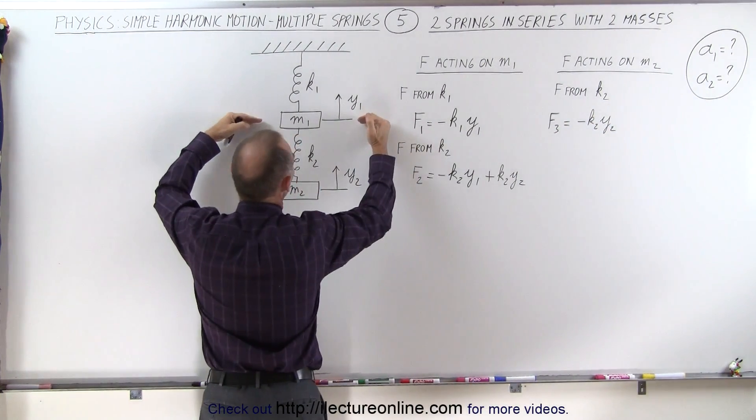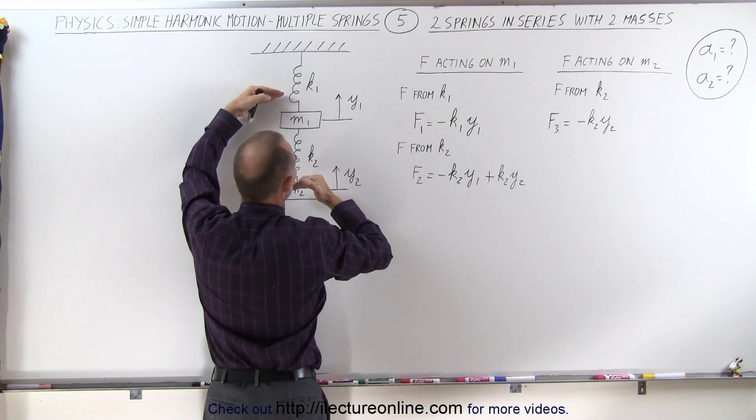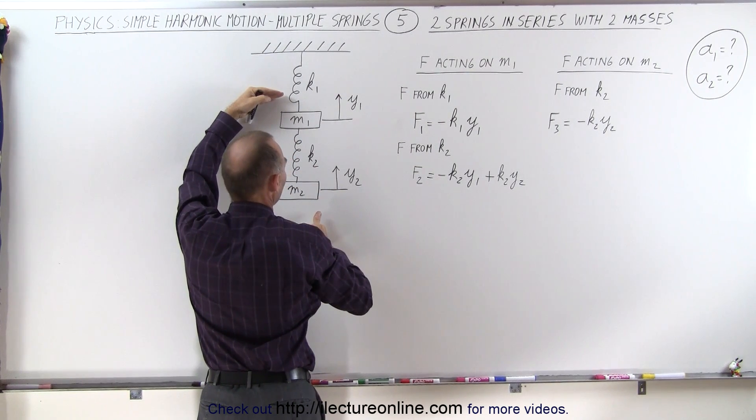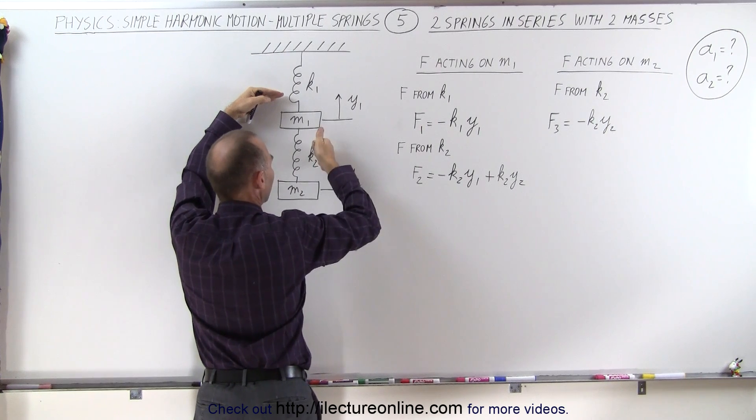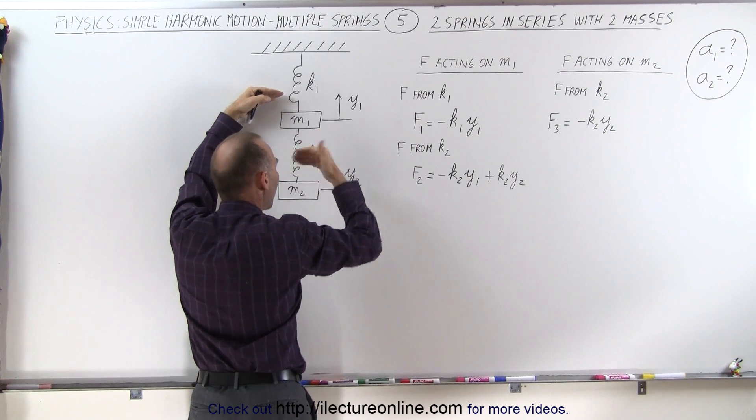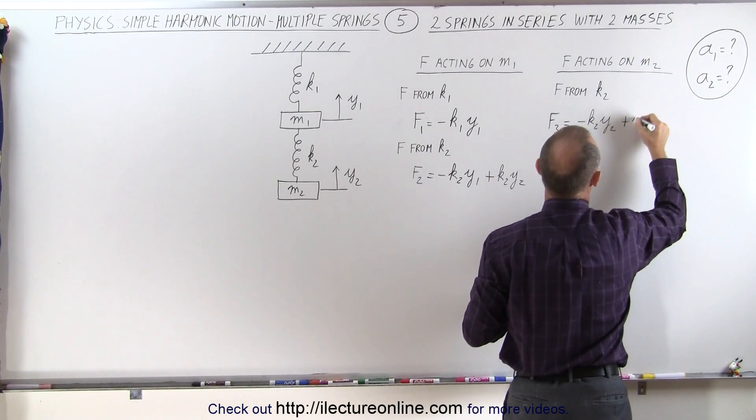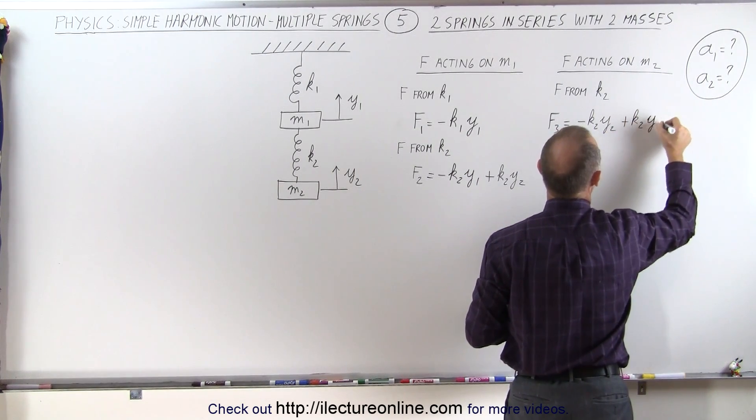But if y1 goes upward, that elongates the spring, which means we'll have it also pull on m2 in this direction. That means there'll be a positive plus k2 times y1.